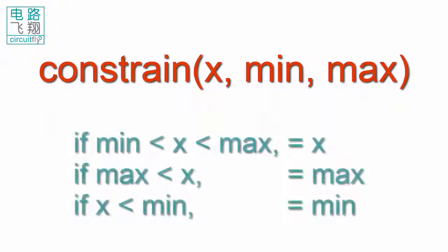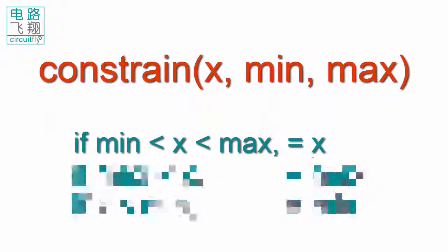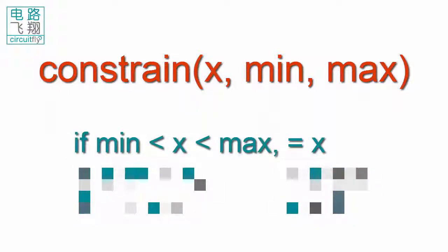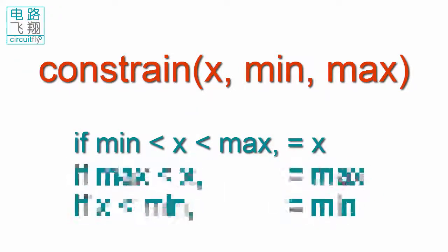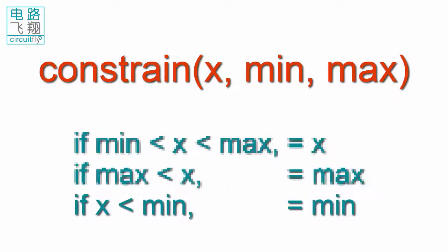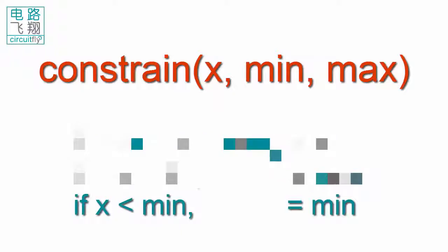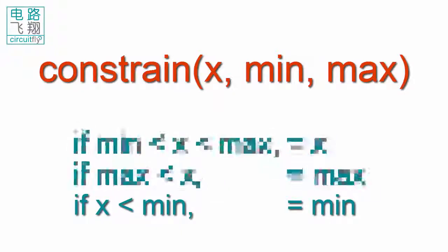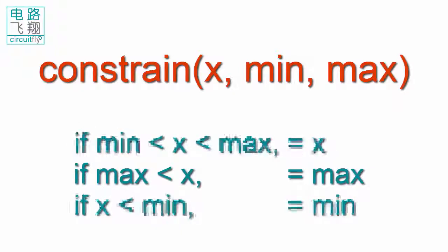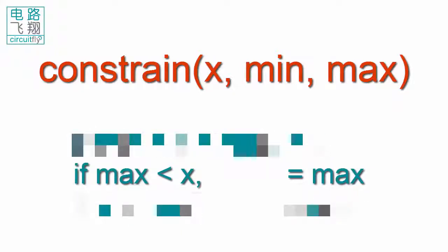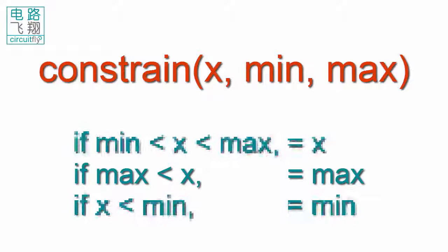Function constrain returns x if x is between min and max, returns min if x is less than min, and returns max if x is greater than max.